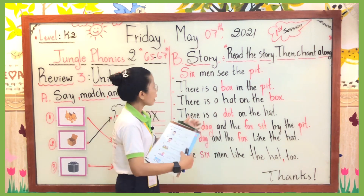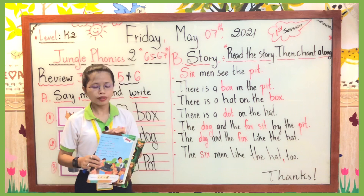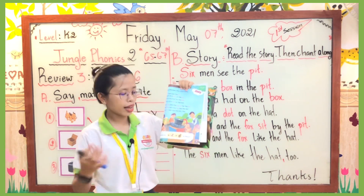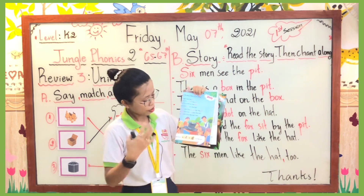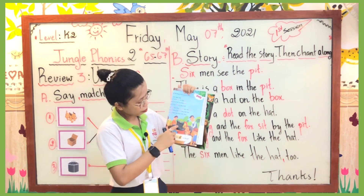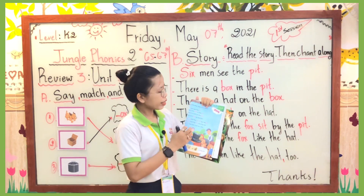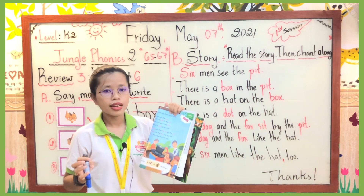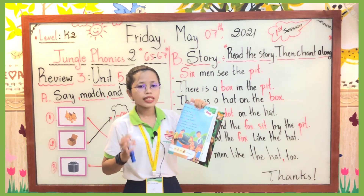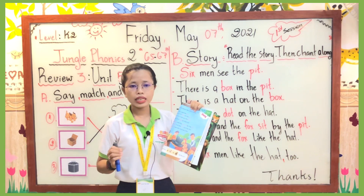Now let's move to the next activity, Part B, where we are going to see and practice reading a story. On this page we can see pictures: a man, a fox, a dog, a pot, and the word 'box.' This story has many vocabulary words from Unit 5 and Unit 6. The teacher will not play the listening but will have you practice reading together.